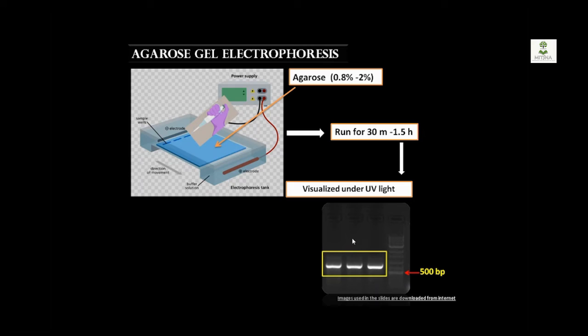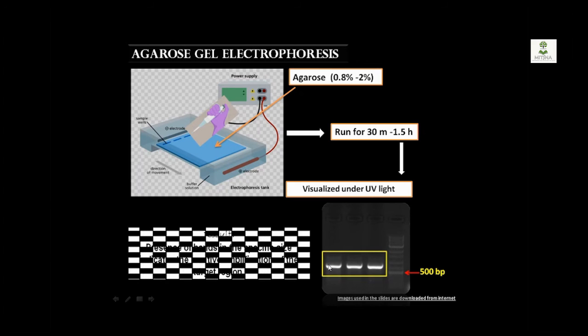So here is an agarose gel which is visualized under the UV light. So here you can see the presence of this amplified bands in this specific size. So the presence of these bands in the specific sites indicates the positive amplification of our target region. So this is how the PCR helps in detection of specific target DNA from any organism.